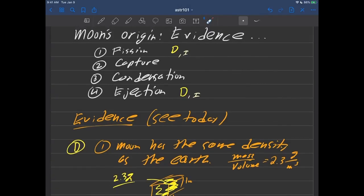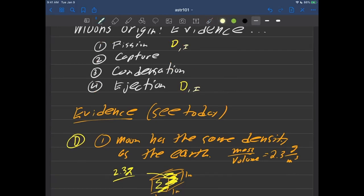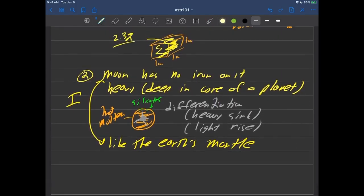Okay, still working on evidence of the moon's origin, and we are hard at work on our table right here. We have a few bits of evidence that supports some of the theories. Let's just continue on, we have just a couple more bits of evidence to discuss here. Okay, so we did one and two.